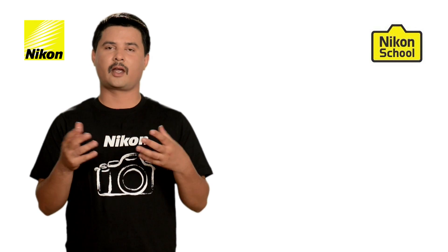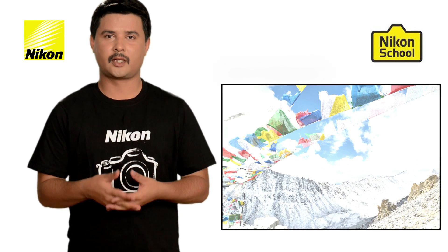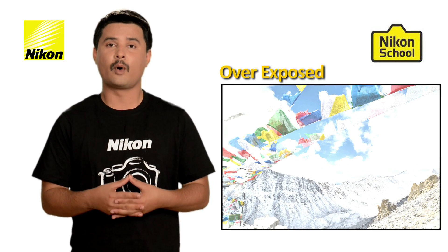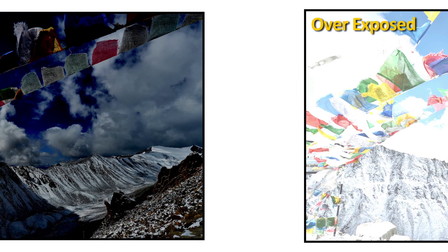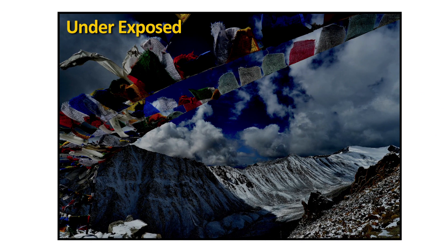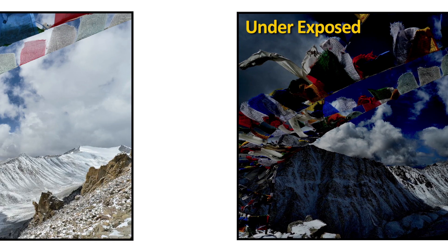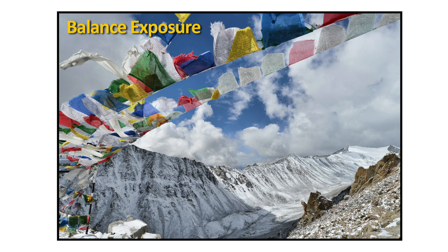Let us have a look at these three images. The first image is an overbright image — technically we call it an overexposed image. The second image is a dark image — technically we call it an underexposed image. The third image is a properly exposed image — technically we call it balanced exposure.